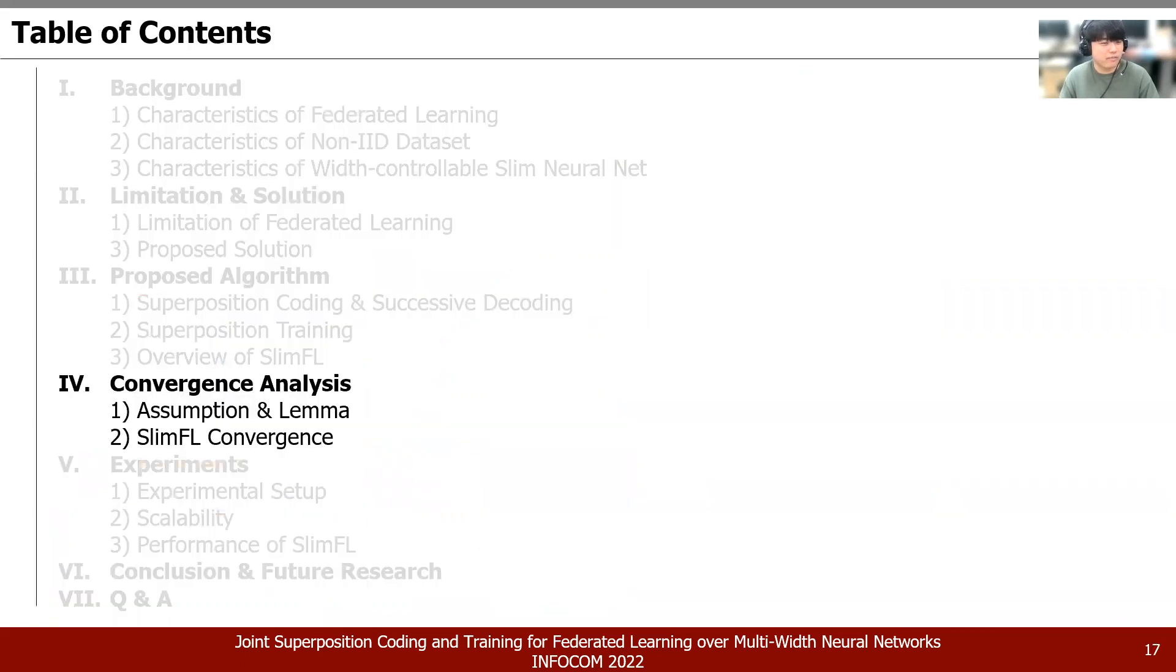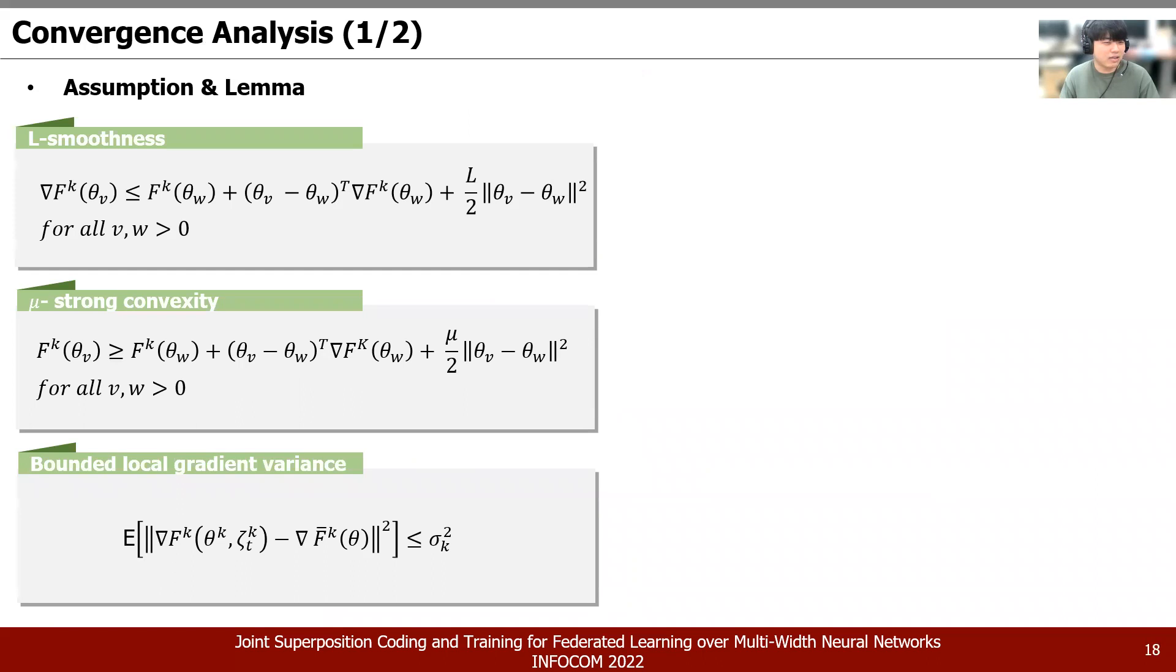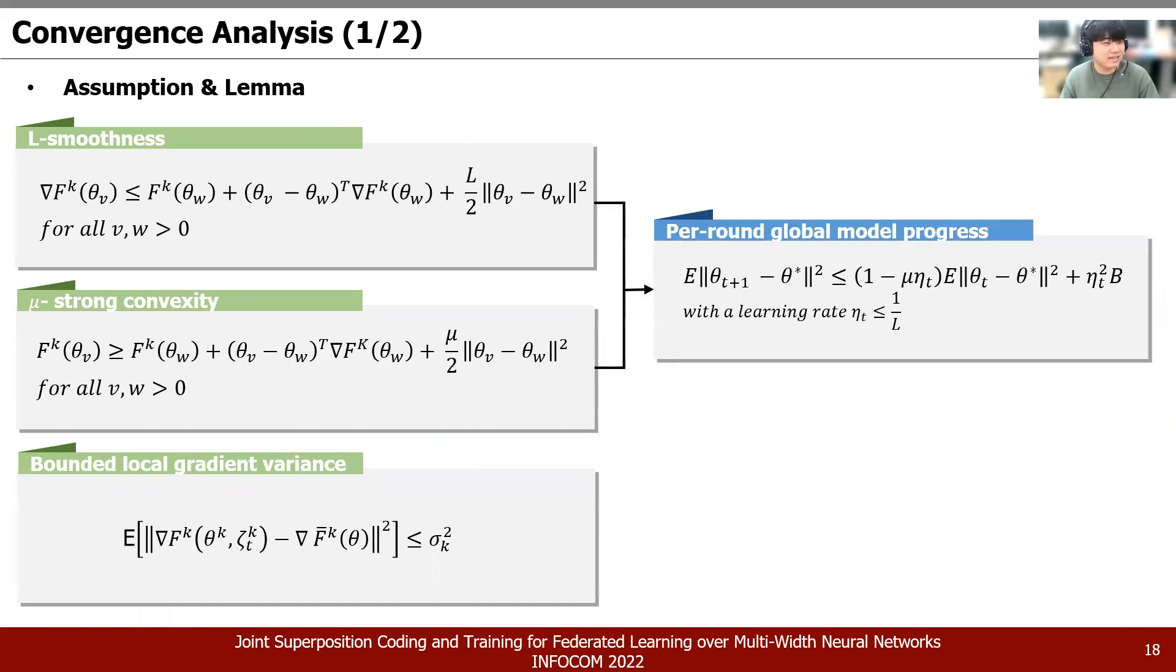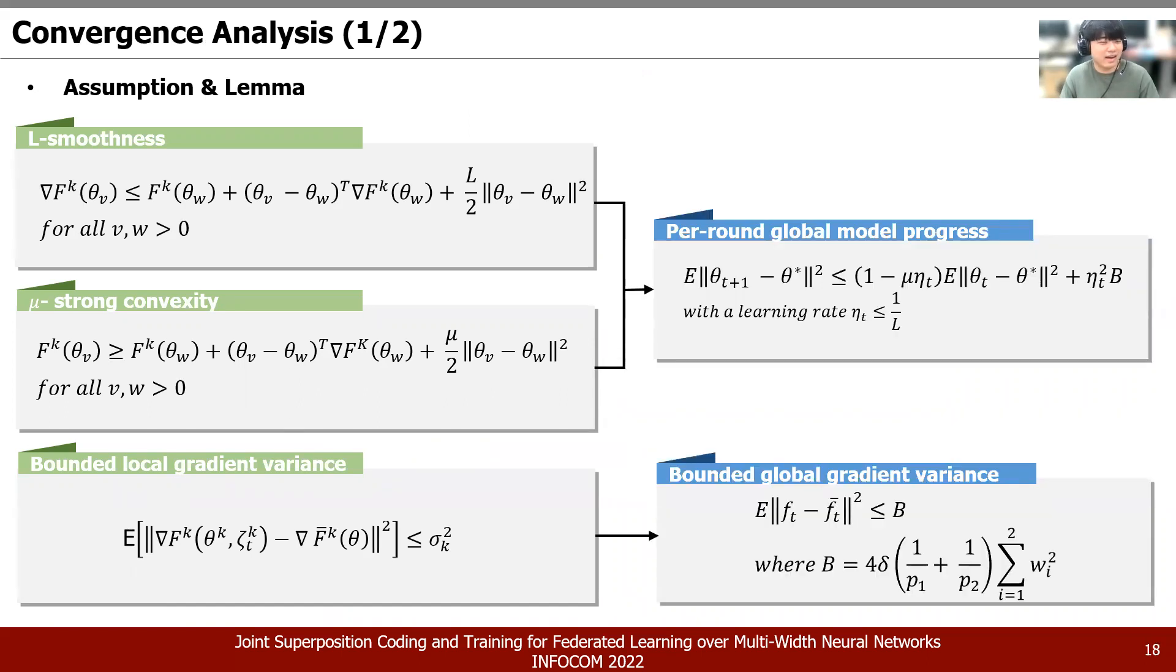In this section, we will prove the successful convergence of our proposed model and continue to explain the conclusions of this paper. At the left side, we made three assumptions. Then, through this, we defined two lemmas at the right side of our convergence analysis of our SlimFL. In further detail, the three assumptions above are the most commonly used assumptions for the convergence analysis of federated learning. We refer to various papers to formulate these assumptions.